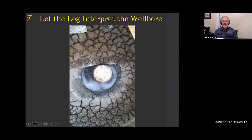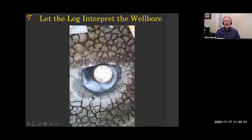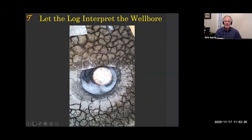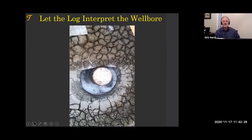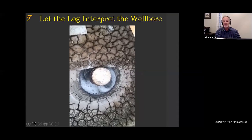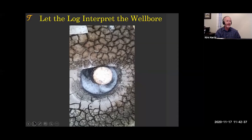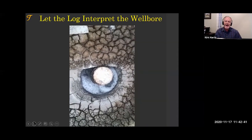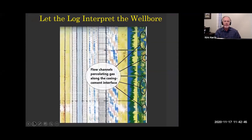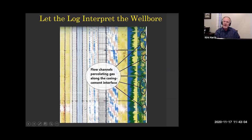We then let the log interpret the wellbore. Here we have our wellbore — we know the problem: we have gas bubbling to surface. I don't need a log to tell me that. If the log says there is no channel, I'll say I don't believe the log — I believe the wellbore. But I'm now trying to let the log interpret the wellbore. I know it's gas — where is it coming from? Here I pick up these flow channels, and now the log is telling me about the wellbore. The wellbore can't tell me exactly where that channel is — the log does. So the log is useful. Even though I promote the wellbore in this interpretation process, I need the log.